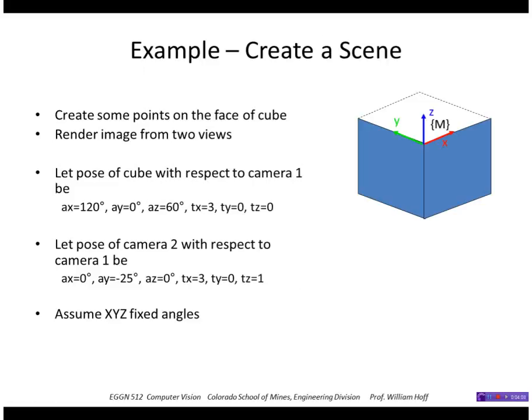So let's look at an example here. I'm going to create a scene consisting of points on the face of a cube. So the points that I'll create will be points like this on the corners and in the middle. And I'm going to look at this cube from two different positions. I guess I'll call them camera 1 and camera 2 here.